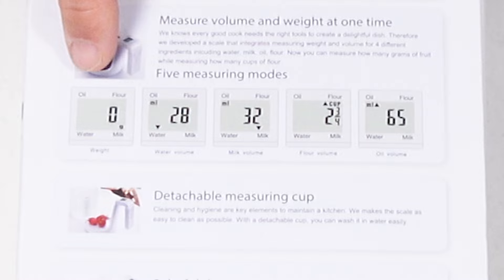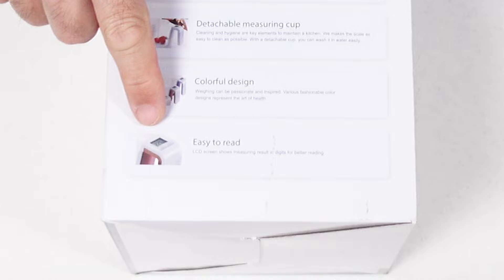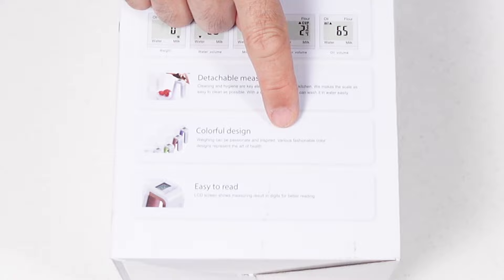Here you can measure volume and weight at one time. We got that oil, flour, milk and water setting thing again. That didn't work out too well on the other scale but we shall see. The measuring cup is detachable. You got an easy to read yet tiny LCD screen. And there's colorful designs. The various fashionable color designs represent the art of health.